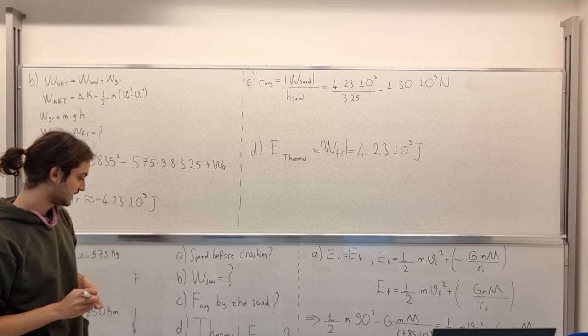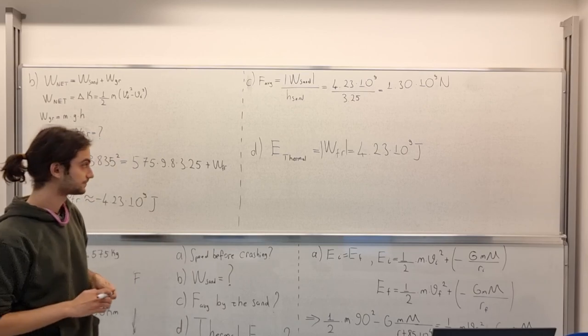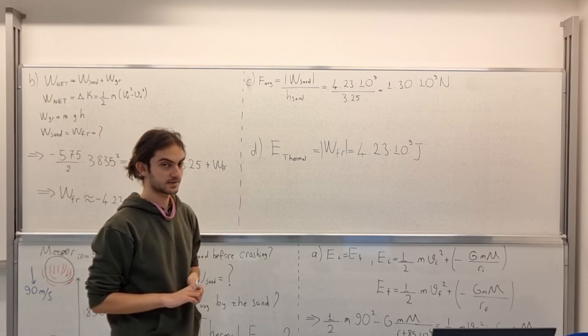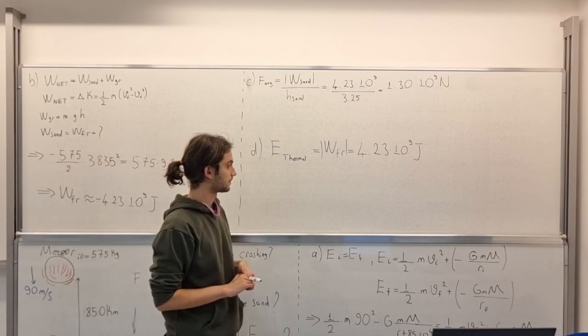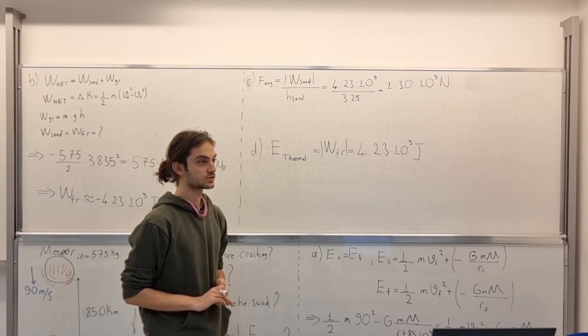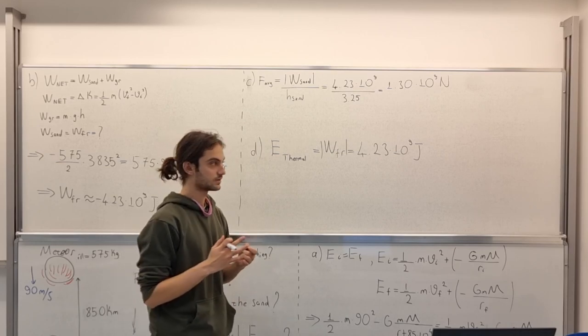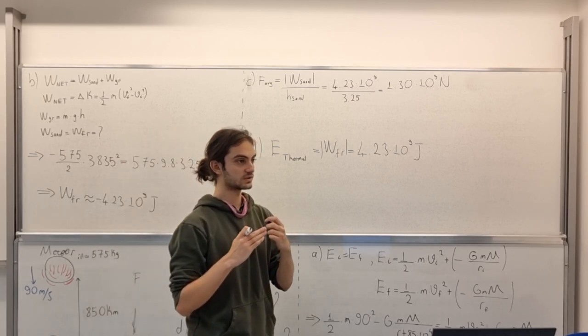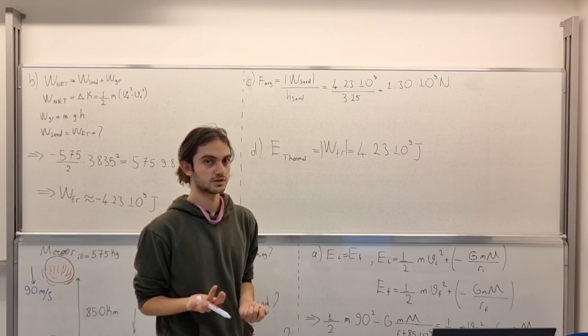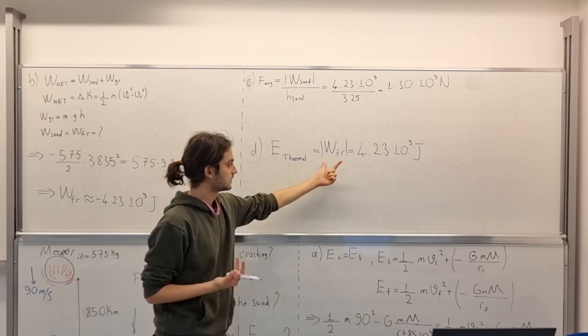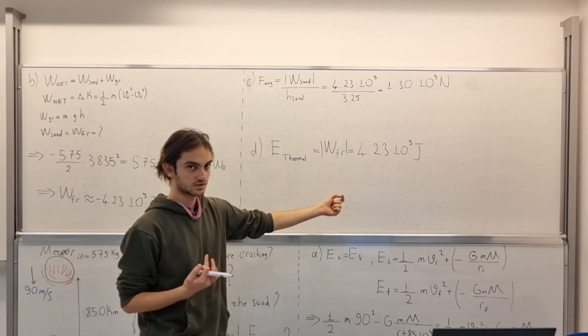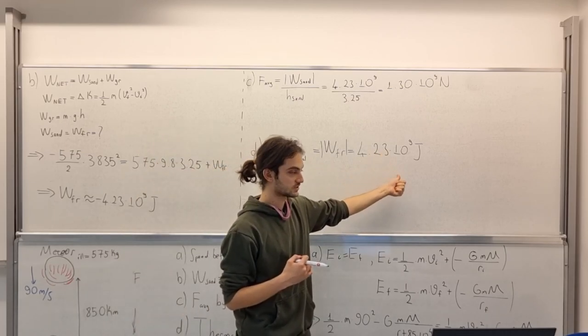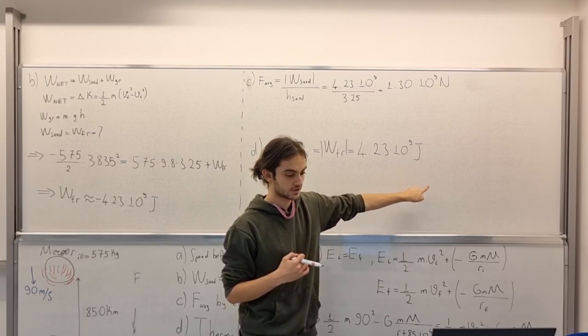Then in option D, we have thermal energy. Thermal energy, it's actually, you can guess that I believe. Because what stops the meteor is friction. And friction, what is the outcome of friction? Thermal energy. That is, the work done by friction has to be equal to thermal energy. That's also equal to 4.23 times 10 to the power of 9 Joules.